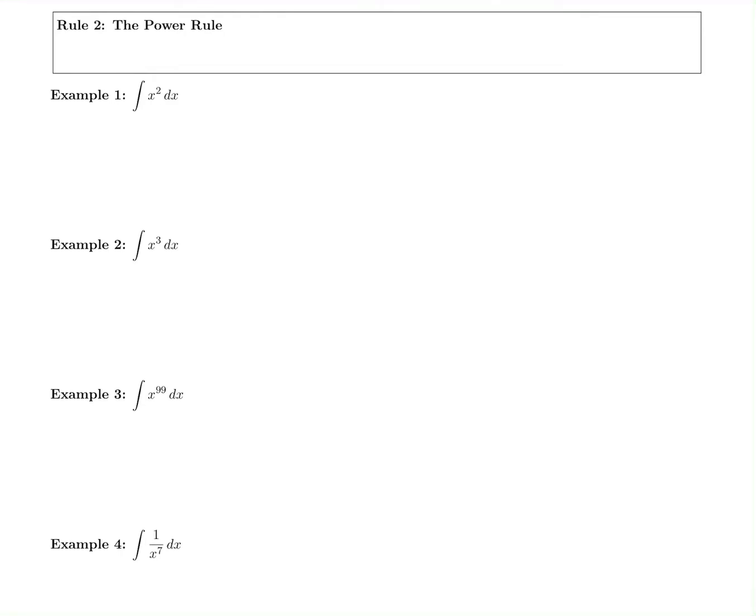The next rule we have is the power rule. This is if you have x to any power, something more interesting, not just taking the antiderivative of a constant, but something with an actual x in it. So x to any power inside our integrand. We take the integral symbol, x to the n, and that dx just means with respect to x. We're doing single variable calculus.